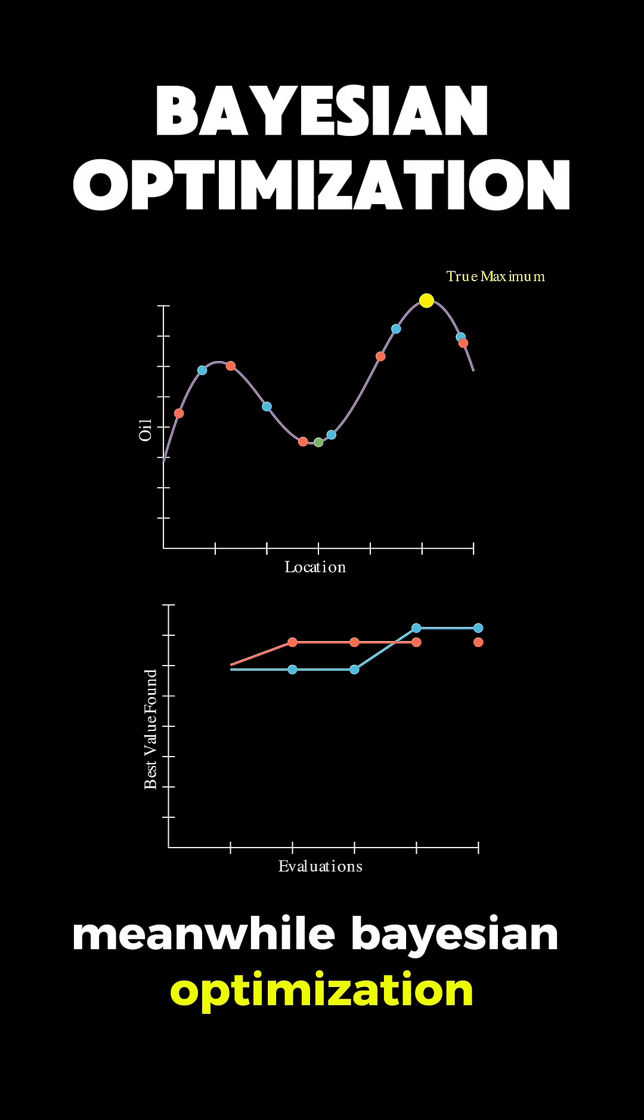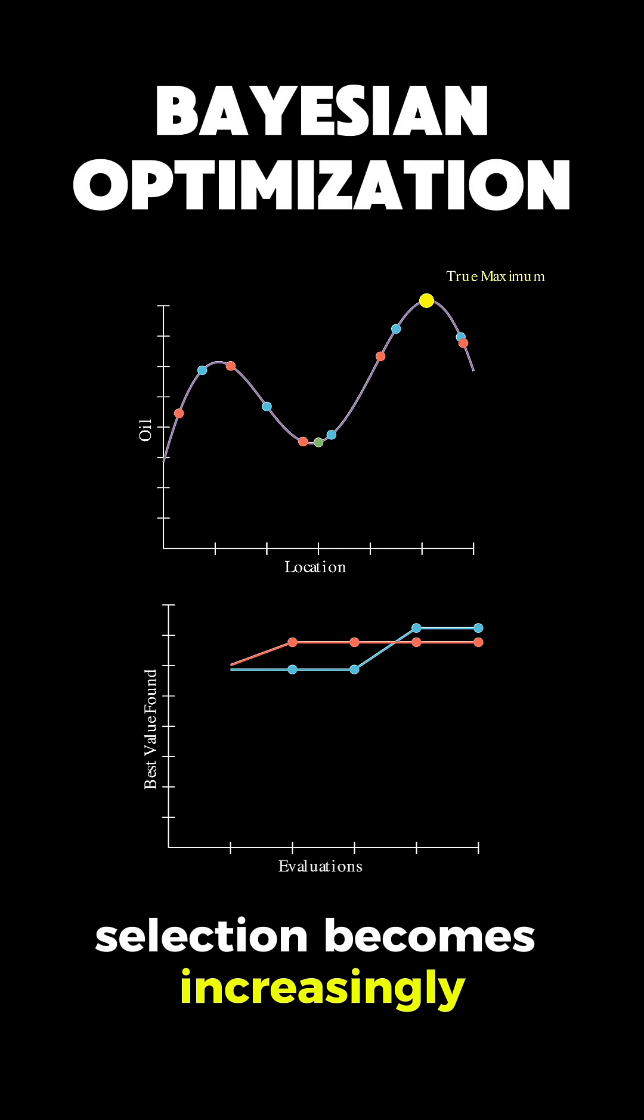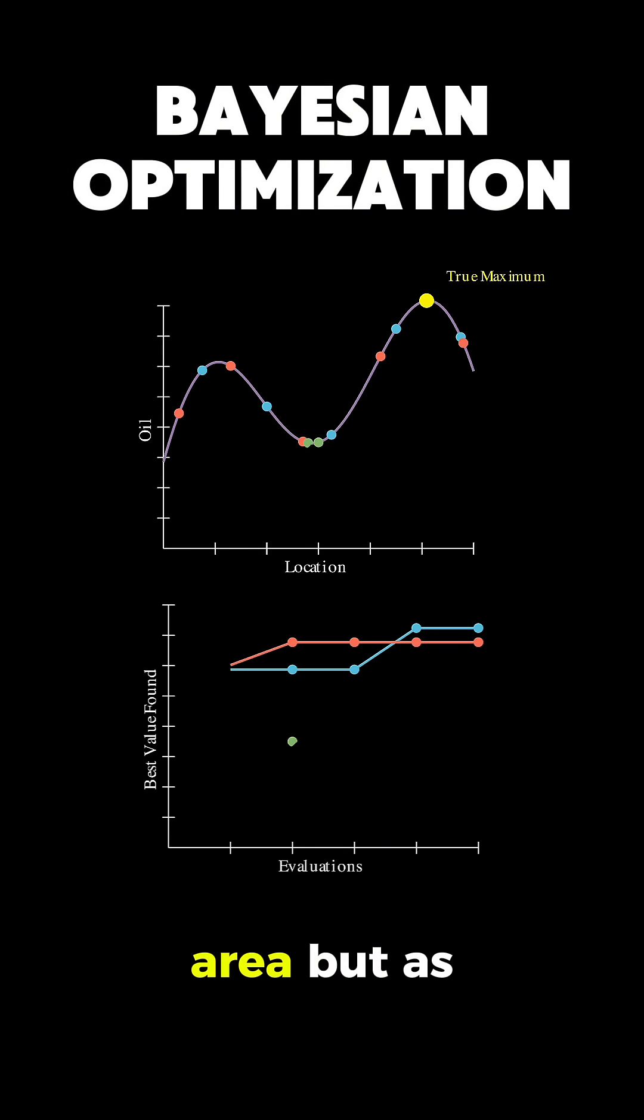Meanwhile, Bayesian optimization selection becomes increasingly focused around the initial area, but as it explores further, we find better points around the global maximum, and we get closer to the peak by exploiting the previous knowledge.